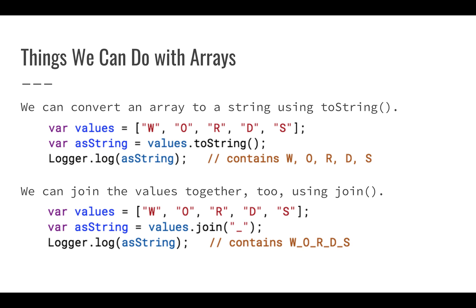We can convert an array to a string using toString. And that's kind of interesting, but it might not do exactly what you expect. So if I use var values and I create an array that has W, O, R, D, and S as strings inside of it, and I convert that to a string, it's not going to give me W, O, R, D, S.